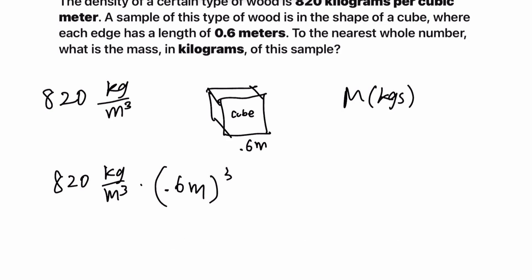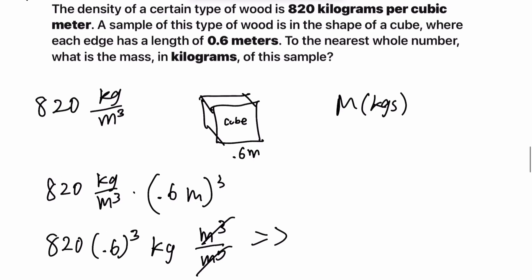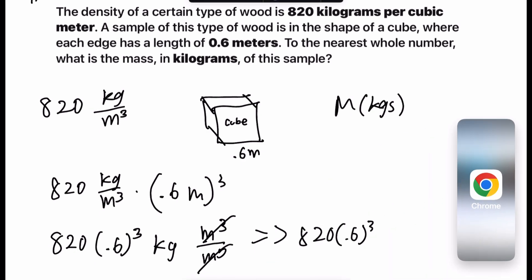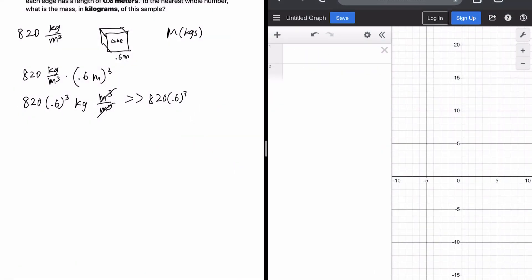And once we do that, we have 820 times 0.6 cubed. And then kilograms, meters cubed, meters cubed. This one is this top meters cubed. This one is the bottom meters cubed. And they just cancel out. So it's really just 820 times 0.6 cubed.